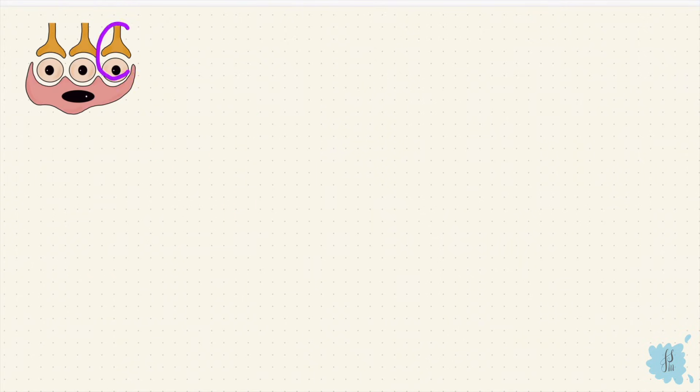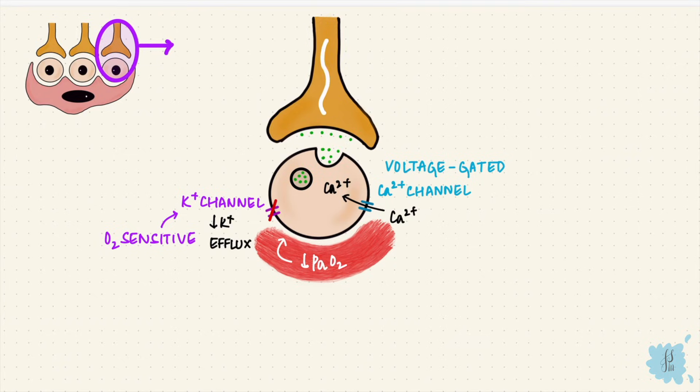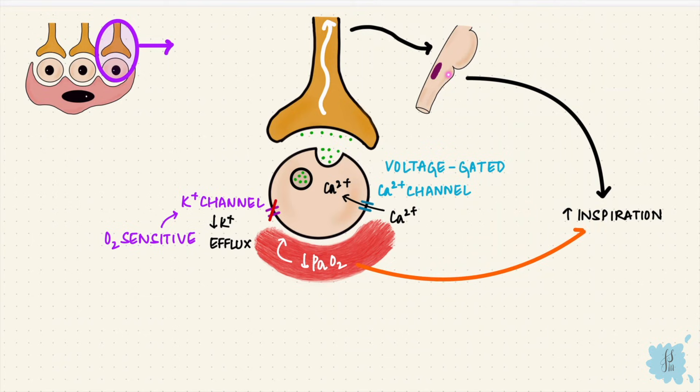Now how does that happen? The cells have potassium and calcium channels. The potassium channels are oxygen sensitive, and when the arterial oxygen reduces, these potassium channels close, reducing efflux of potassium, which opens the voltage-gated calcium channels. So calcium enters the cell. That stimulates the release of a neurotransmitter, which excites the afferent neuron. The impulses then travel to the dorsal respiratory group, stimulating inspiration. So low arterial oxygen stimulates inspiration.